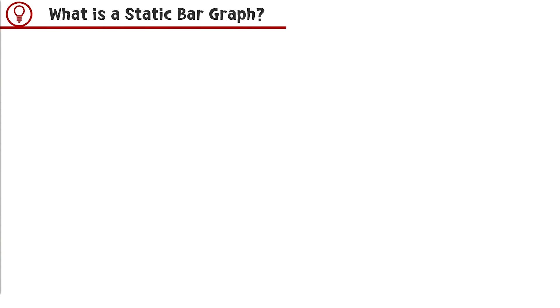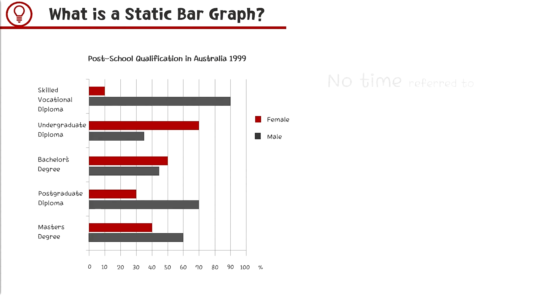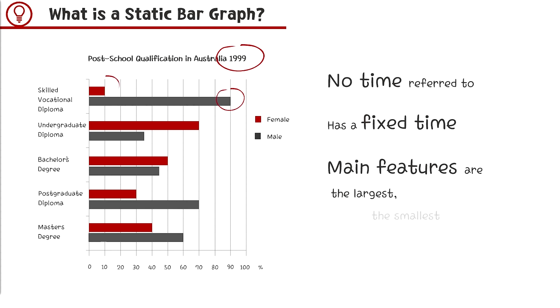What is a static graph? This is a graph with no time referred to, or has a fixed time, and its main features are the largest and the smallest, and similarities.